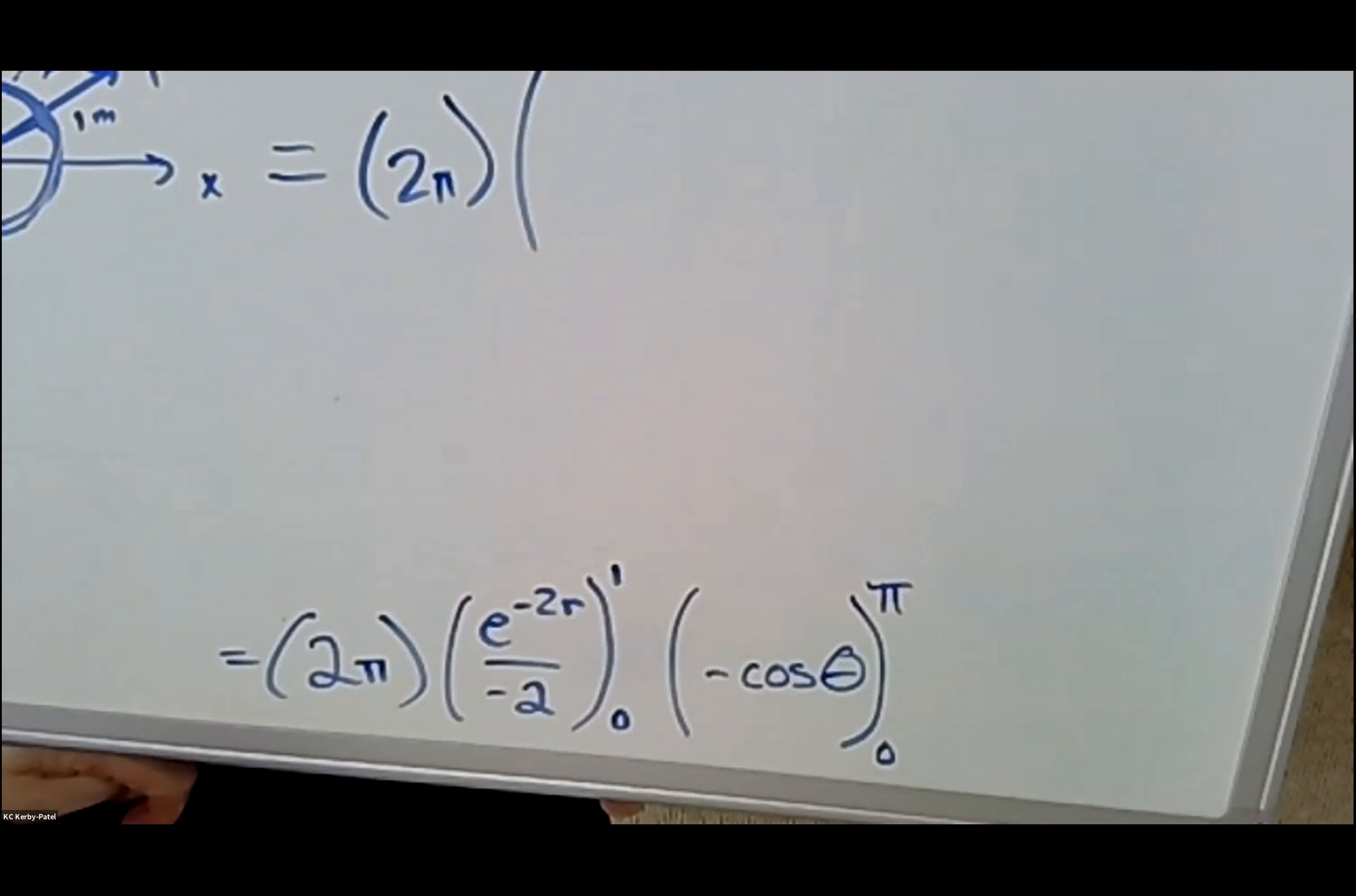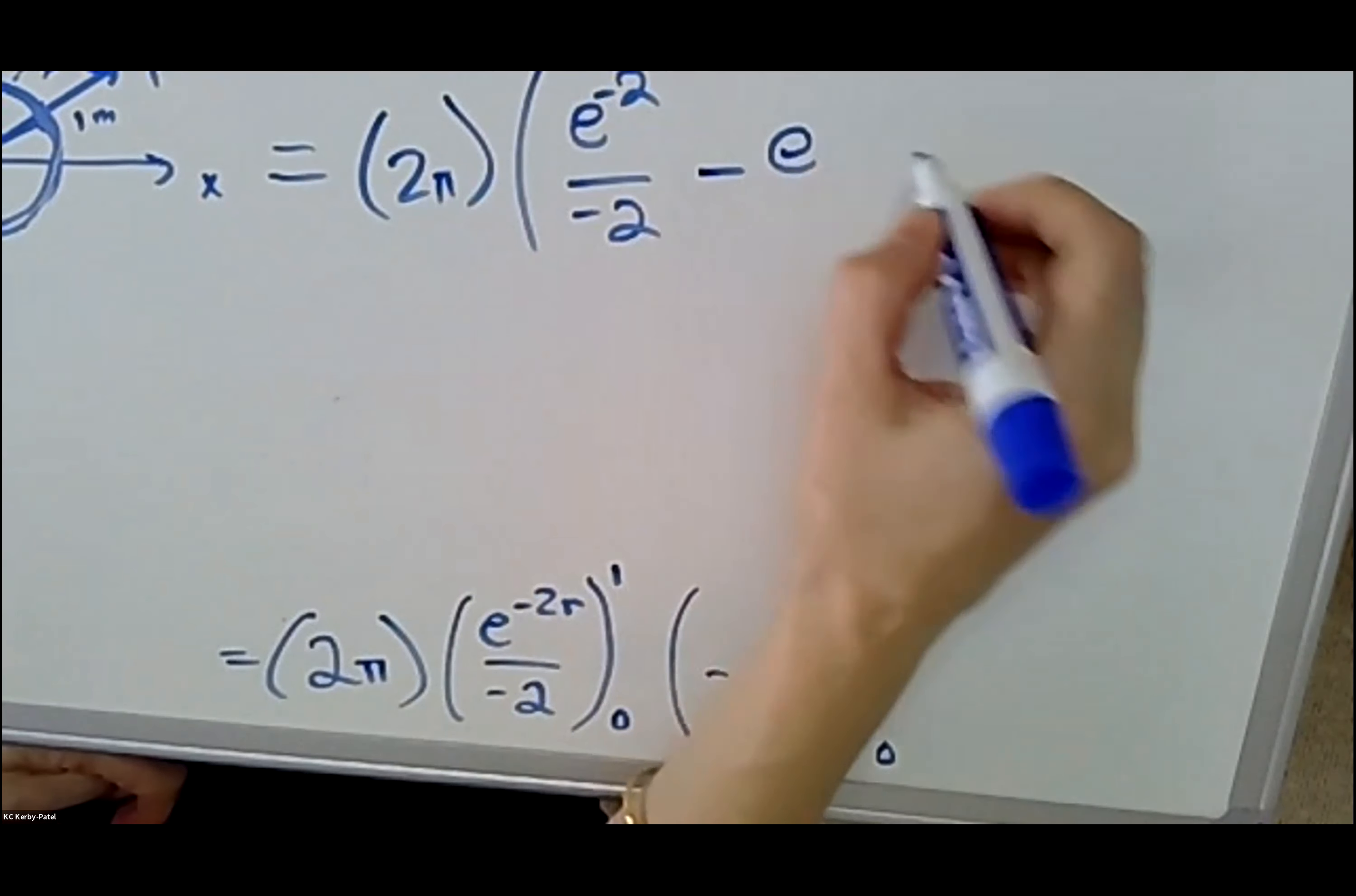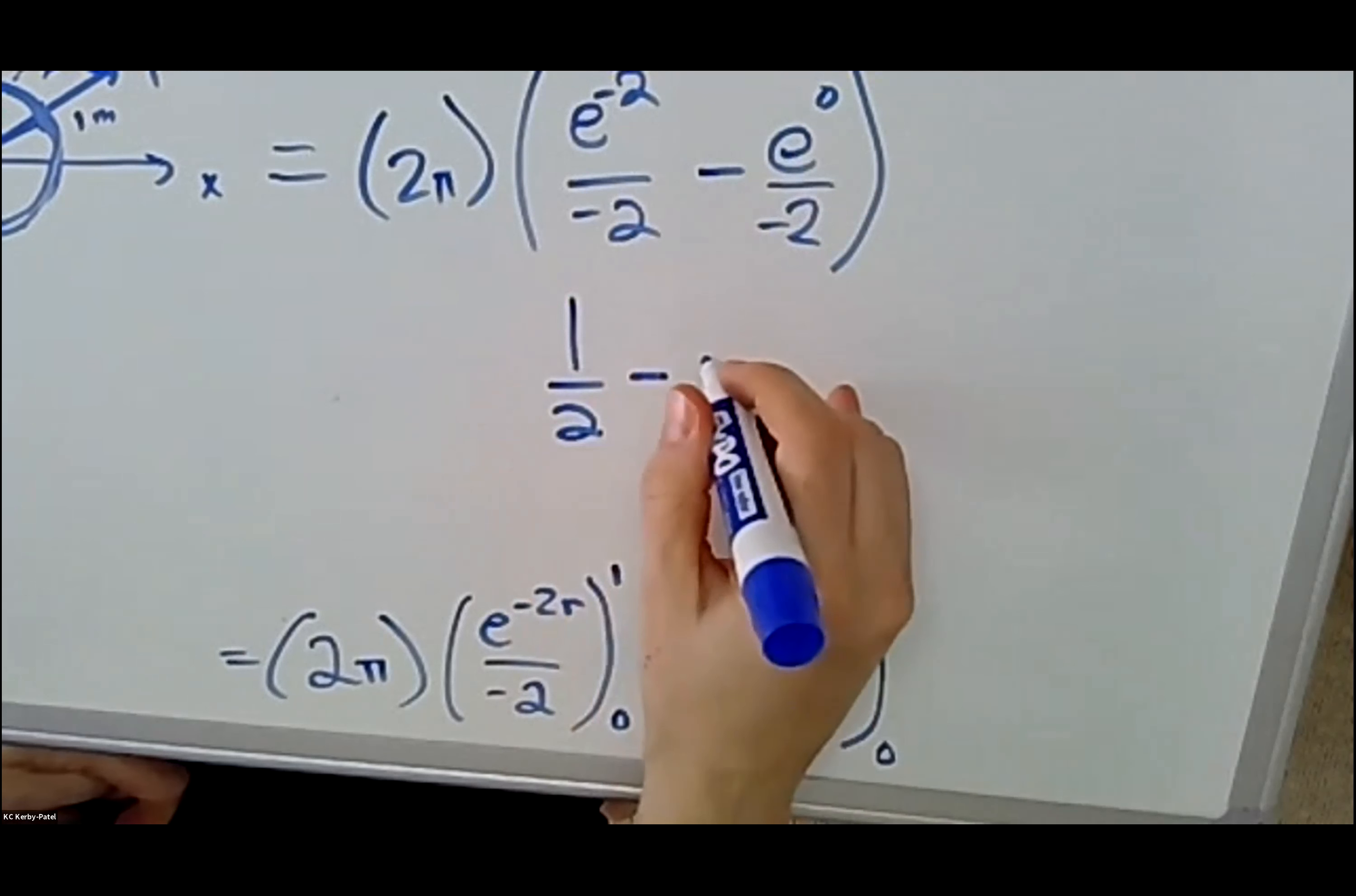Alright, so 2π looking good. These are e^(-2r) over -2 where r equals one and r equals zero. So e^(-2) over -2—that's the r equals one version—minus e^(-2 times zero), which is zero, which is actually one over -2. So this actually, if I simplify it, works out to 1/2 minus e^(-2) over 2.